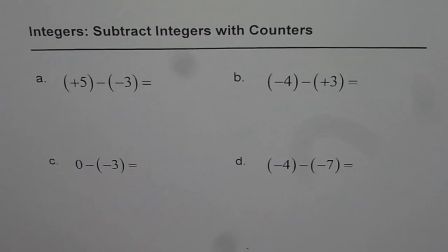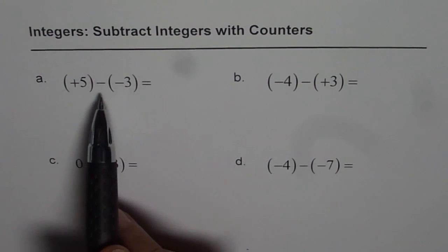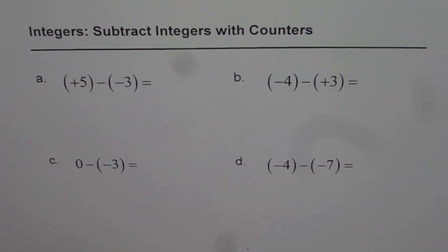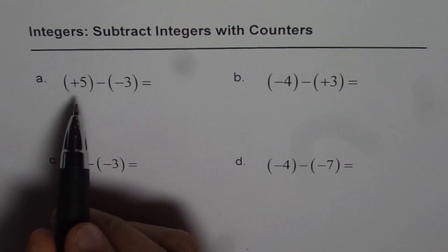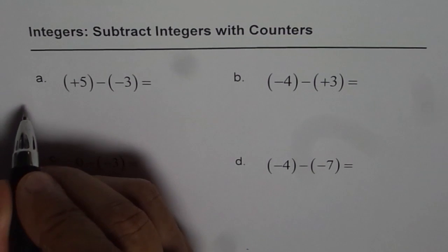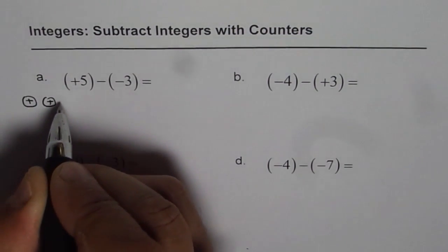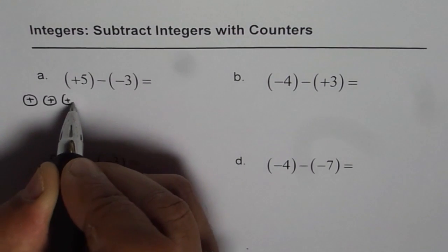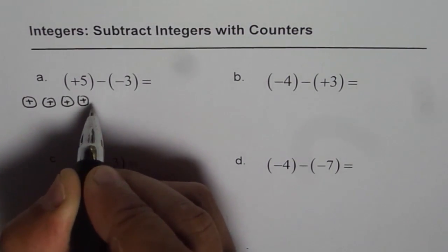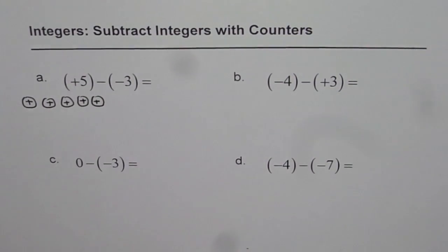Now let us see how to subtract integers with counters. Let us start with part A which is plus 5 minus minus 3. Plus 5 means positive 5 counters. Let me make positive 5 counters: 1, 2, 3, 4 and 5. So these are my plus 5 counters.